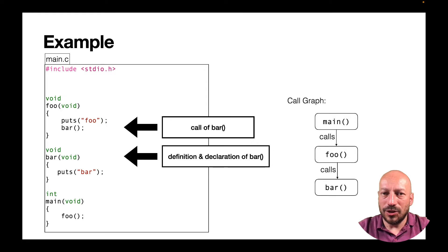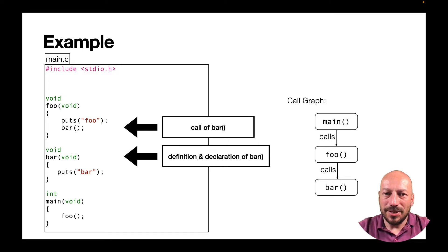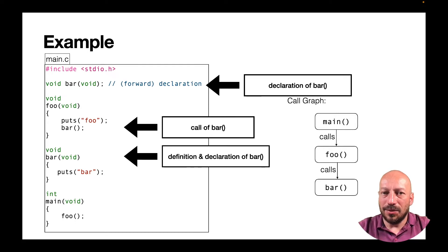To overcome this problem, you could put the implementation of function bar before function foo so the compiler already has this information. But this solution will not work if function bar also calls function foo — they could call each other. One general way to overcome this is to use a forward declaration before function foo: just the bookkeeping information that there will be some function bar available later, a function that doesn't expect any parameters and doesn't return a value. Then the compiler can generate code for this call before the definition was seen.